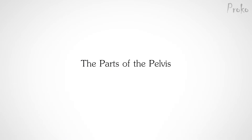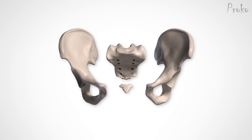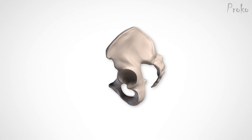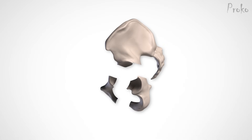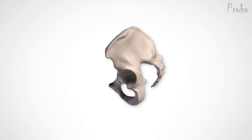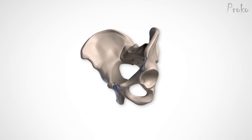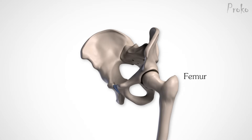Let's take a look at the parts of the pelvis. The two hip bones, along with the sacrum and coccyx of the spine, form what's known as the pelvis. Each hip bone consists of three parts. These three parts actually start out as three separate bones at birth and fuse together throughout puberty. These three bones fuse together right in the middle of the acetabulum, a deep socket of the ball and socket joint of the hip. The femur sits right in there and rotates in all directions to move the leg.